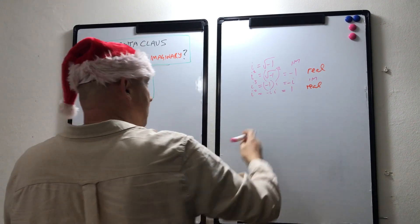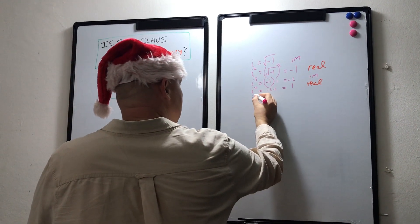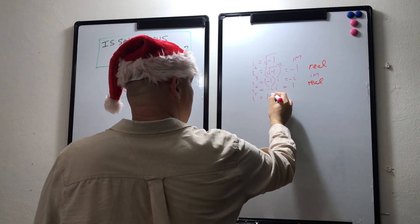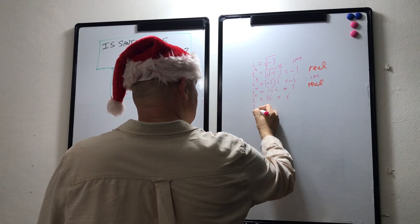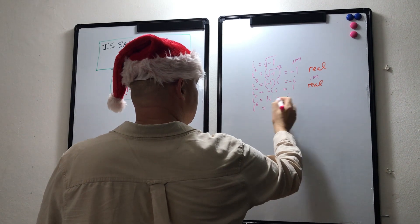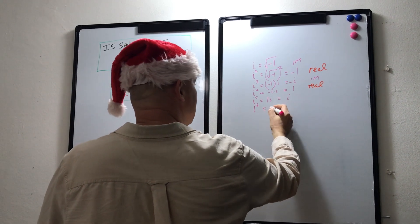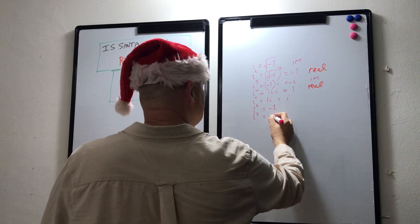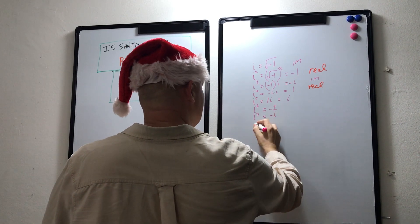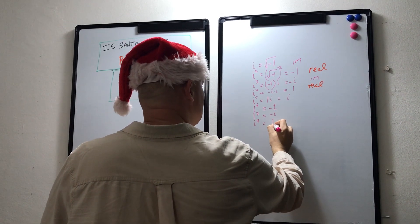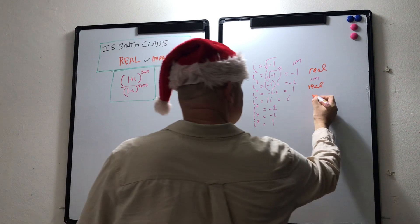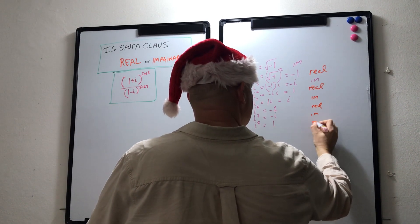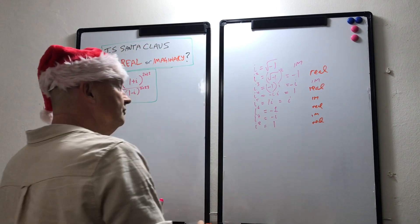Now let's keep going and we'll find a pattern emerging. i to the power of 5 is i⁴ times i, which is 1 times i, which is i. i to the power of 6 is i⁵ times i, which is minus 1. i to the power of 7 is again minus i, and i to the power of 8 is 1 again — real, imaginary, and real.